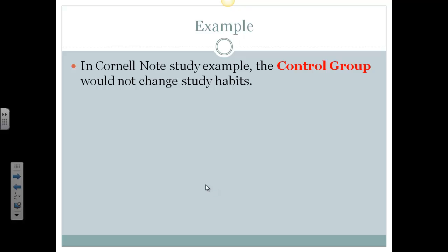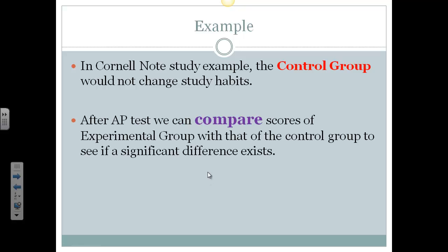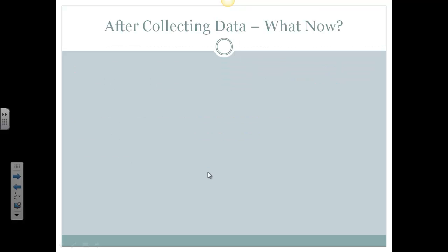So let's look at our example. In our Cornell notes study example, the control group would not change their study habits at all. And after the AP test, we compare the scores of the experimental group that used the Cornell notes to that of the control group to see if a significant difference exists. So we collect our data, we run our tests, we have our data. Now what?